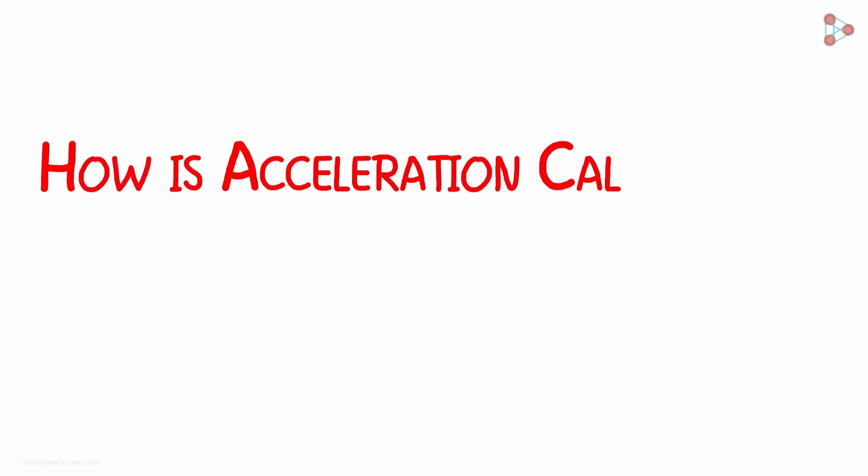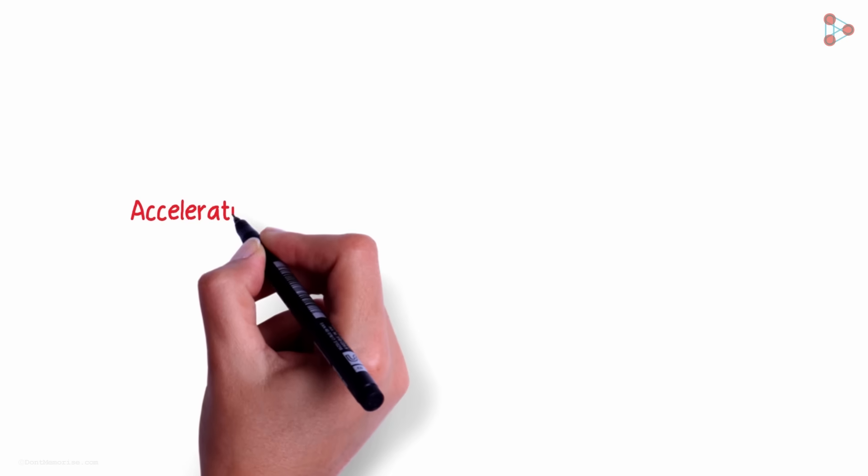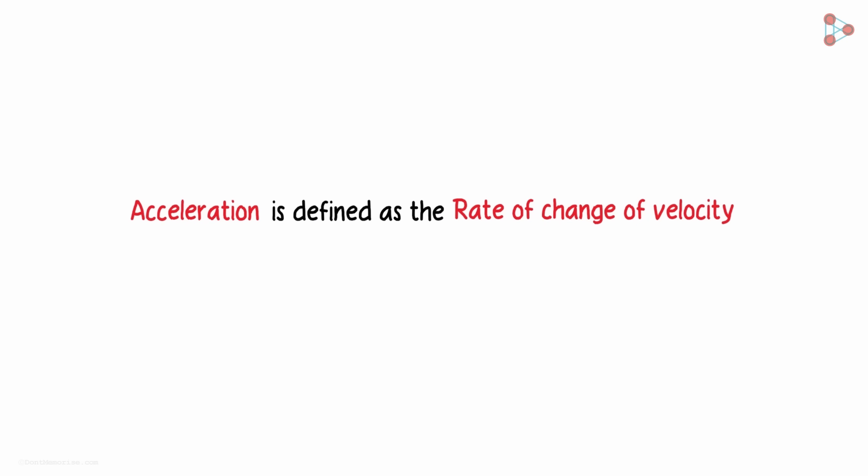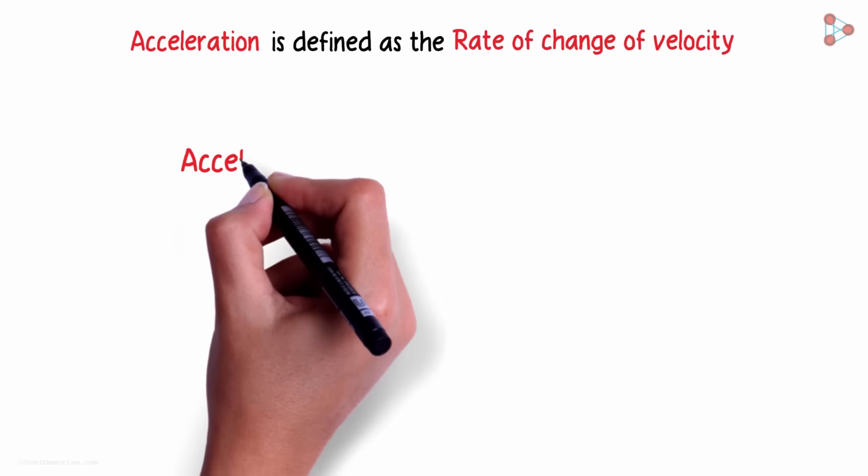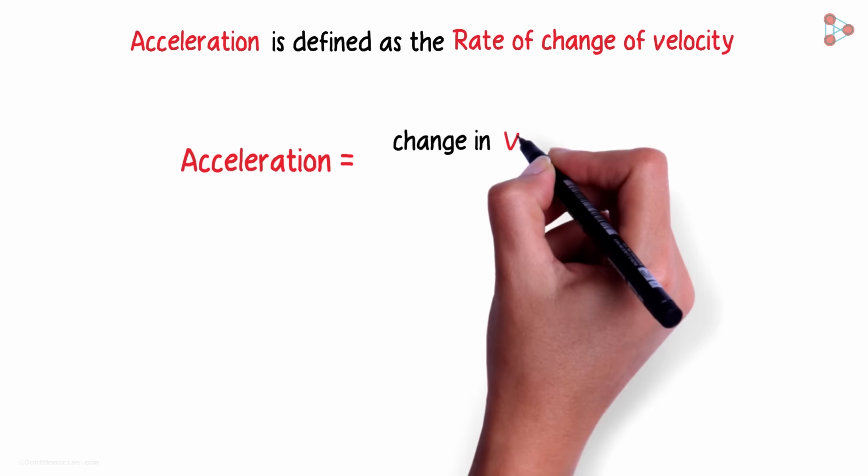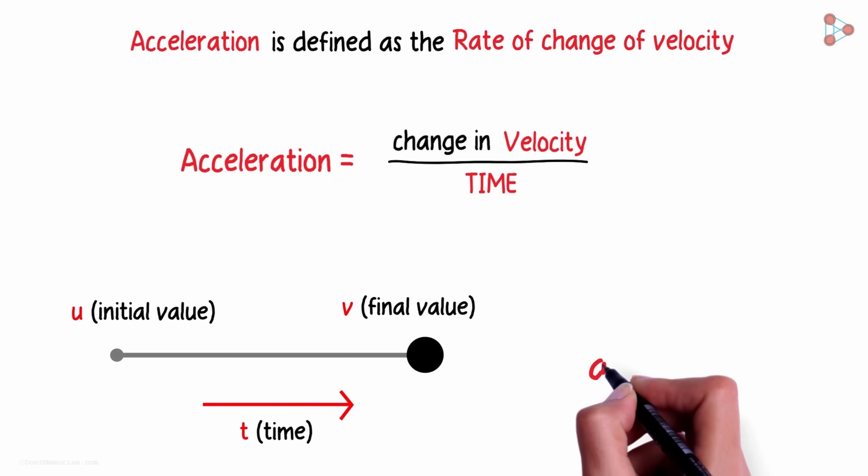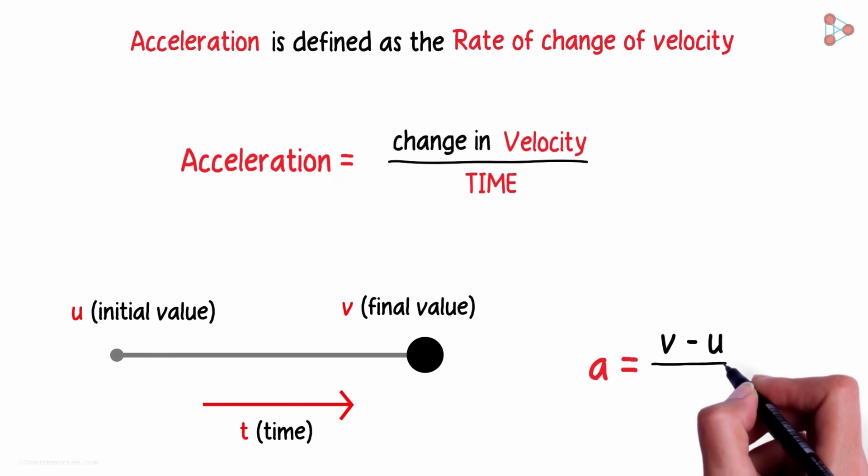But how is acceleration calculated? Acceleration is defined as the rate of change of velocity. In terms of a formula, acceleration can be written as change in velocity over the time taken. If the velocity of an object changes from an initial value of u to the final value of v in time t, then the acceleration a can be written as v minus u over t.